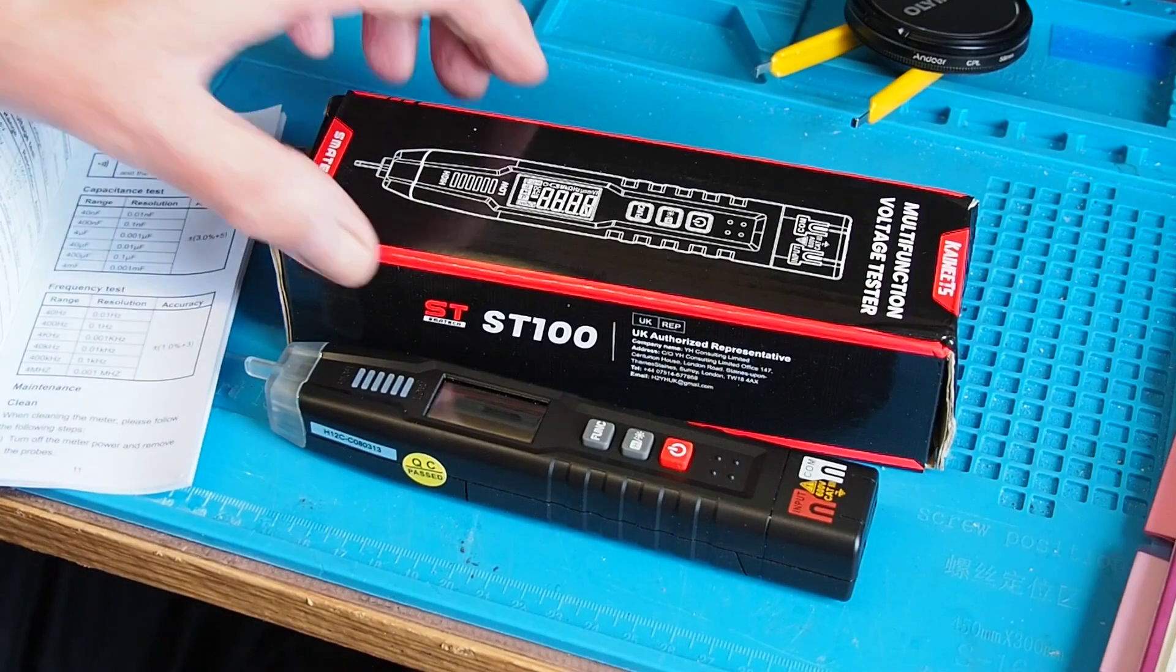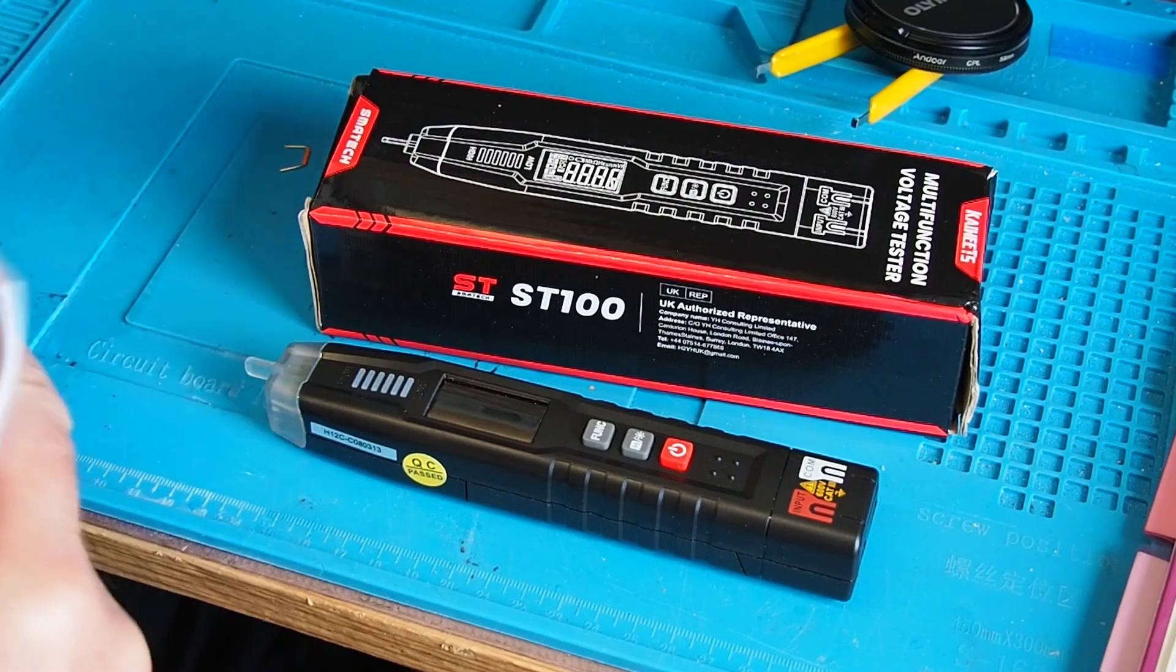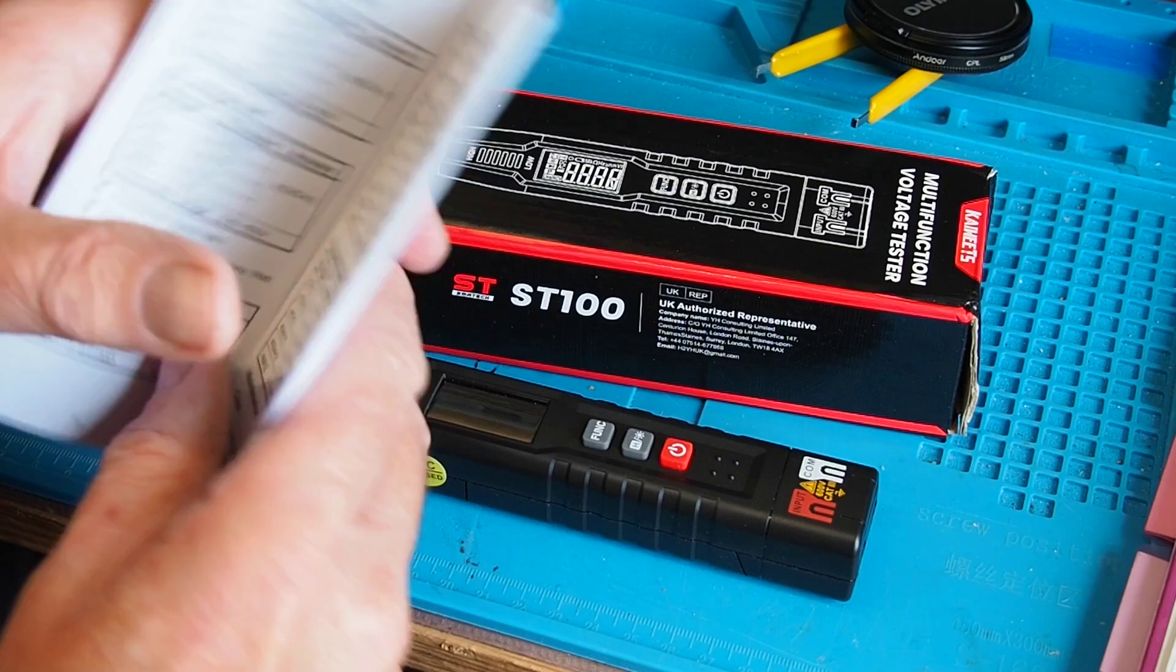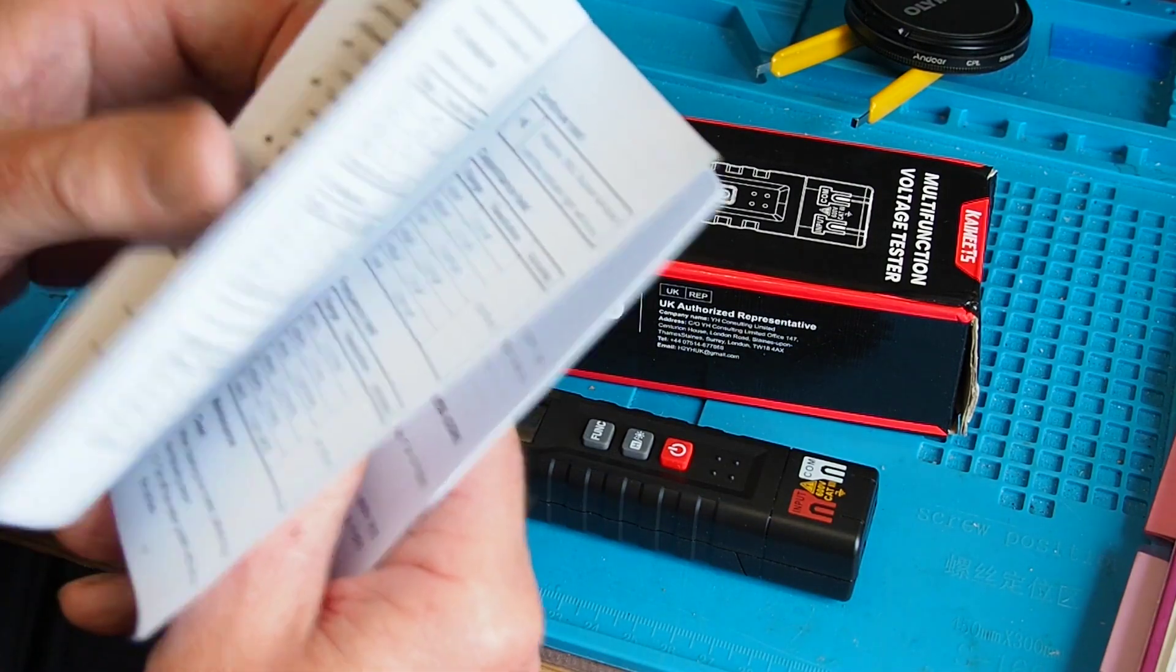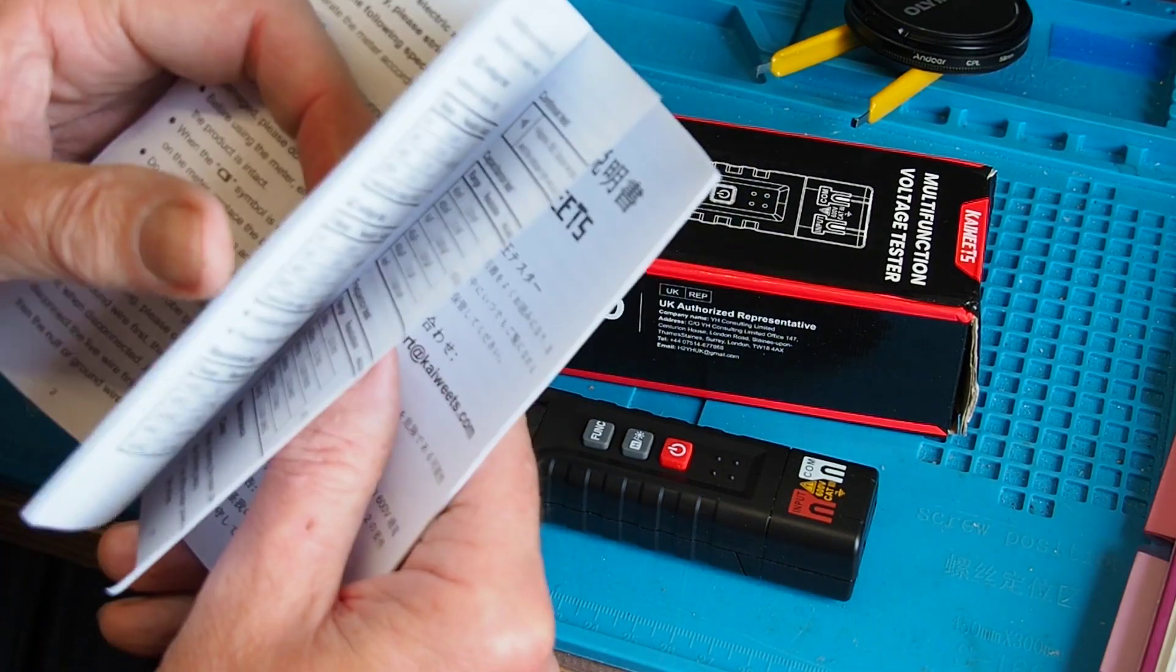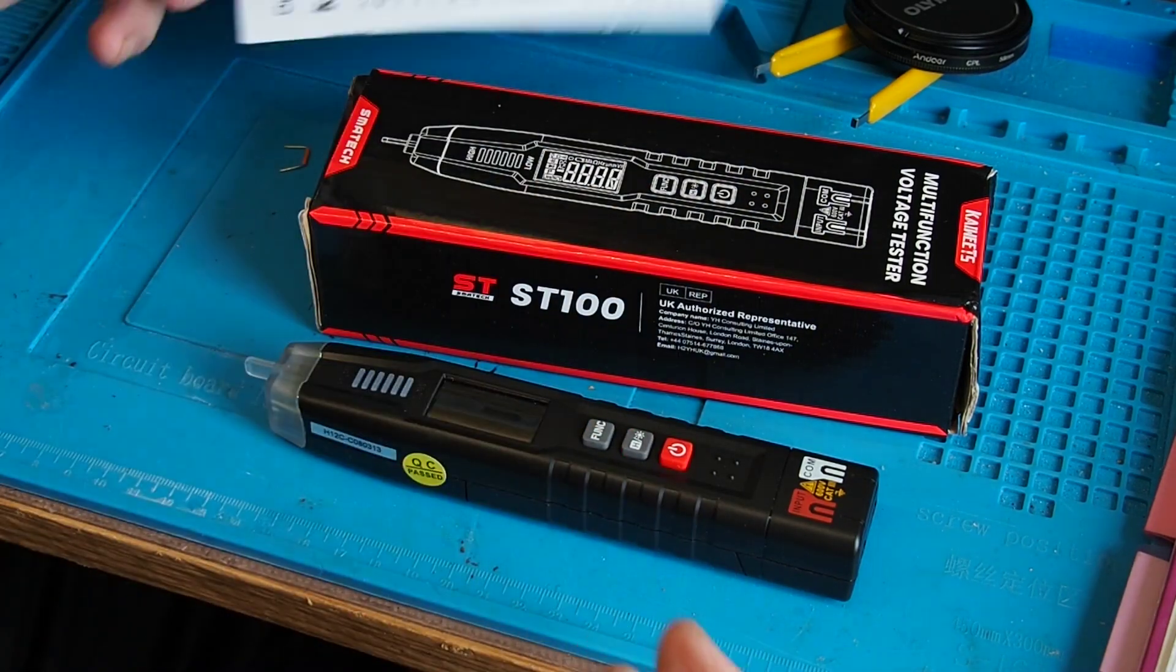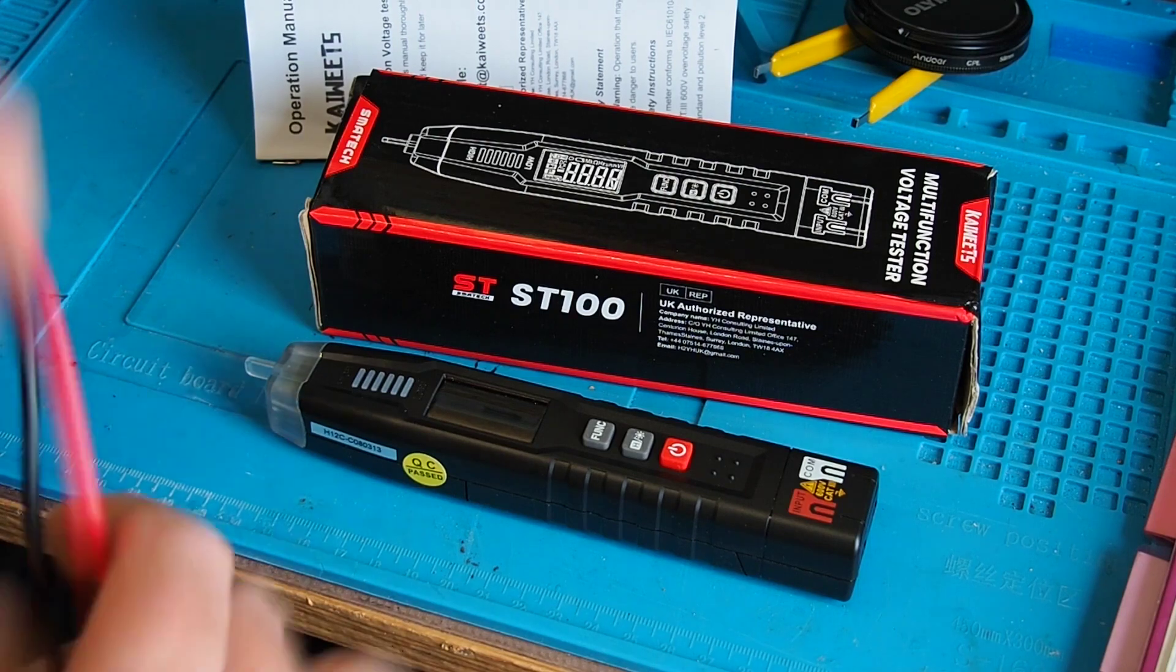Let's look at what we get in the box with the ST-100. We get a manual that's actually quite readable. This is a dual language one but half of it's dedicated to English and does appear to have been written by somebody who can actually speak English, so that's always good.